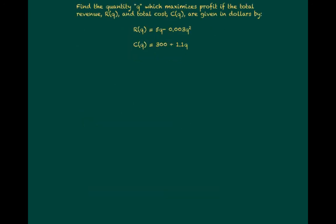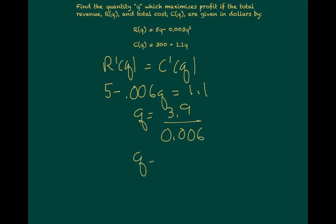Rather than go through all those steps again, I'm simply going to set R' equal to C' and solve. The derivative of revenue is just going to be 5 minus 0.006q. I'll set that equal to C', which is going to be 1.1. I'm going to do some algebra here and solve for q, and I get q equals 3.9 divided by 0.006, which means q equals 650 units. So if we knew that our revenue and our cost functions were these given, I would set my factory up to make 650 units. That means that I would schedule workers for that amount, I would buy that amount from my suppliers, and if I did that, I would maximize the amount of money I was making.